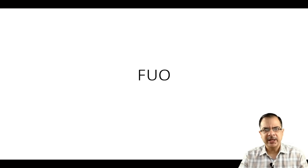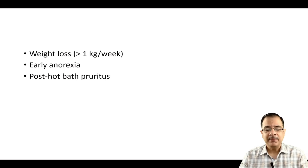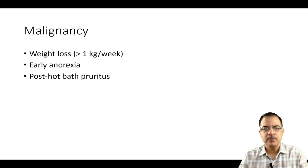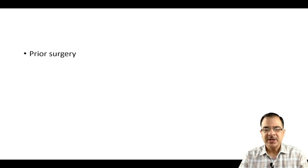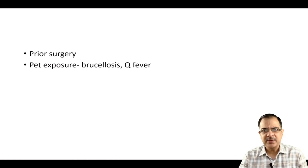For fever of unknown origin, etiologies that come out include infections, malignancy, and rheumatic diseases. For malignancy: weight loss of more than 1 kg per week, early anorexia in the course of fever, and characteristically post-hot-bath pruritus — this is suggestive of malignancy, especially blood malignancies. History of prior surgery and pet exposure suggests brucellosis or Q fever, which are uncommon in the OPD and fall under fever of unknown origin.